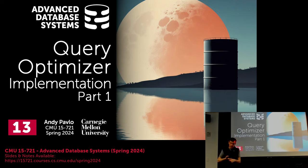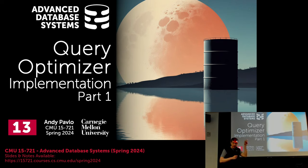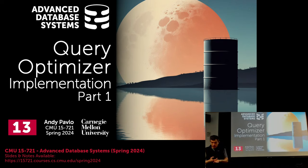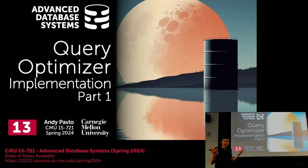Every year I debate whether to even bother teaching 721 and just teach a topics course on query optimization. Admittedly, this is the part of databases that I know the least about. For people that are actually working on the query optimizer here on the new project, at this point you guys probably know more than I do. But this is the hardest piece, because obviously we can build the fastest engine, but if our query plans are terrible, then it's all wasted.